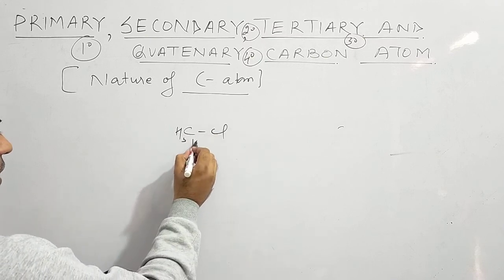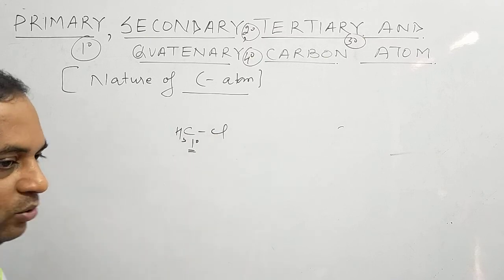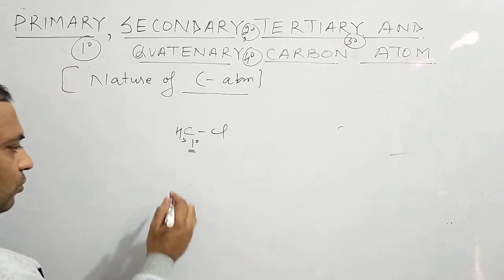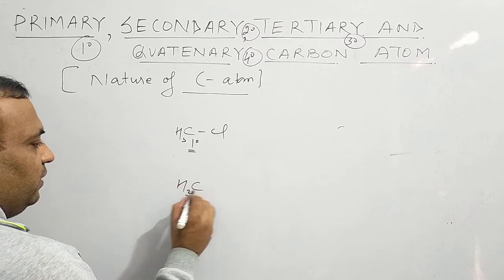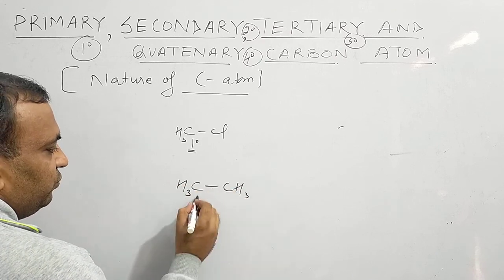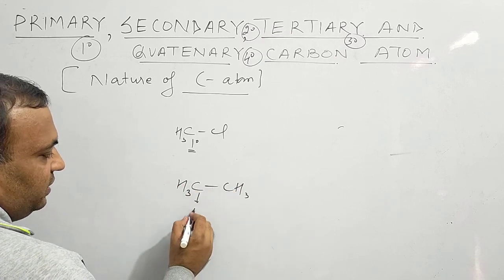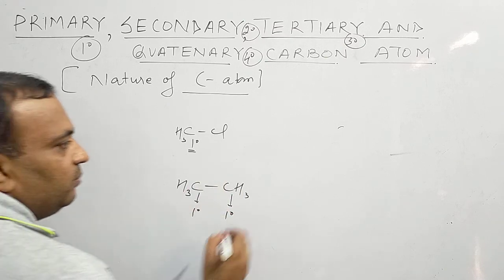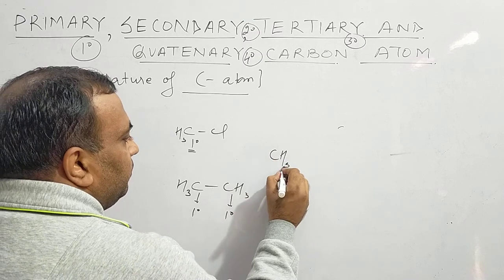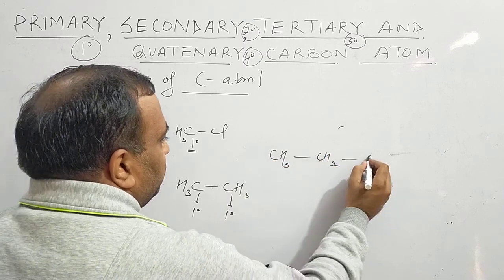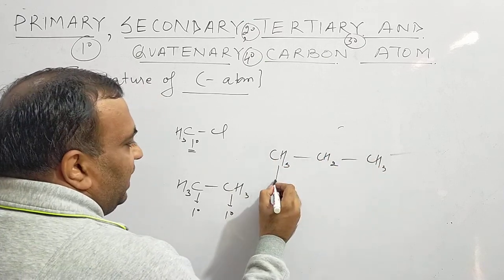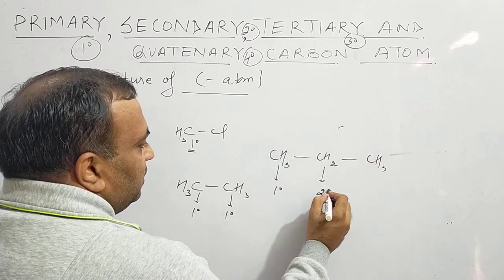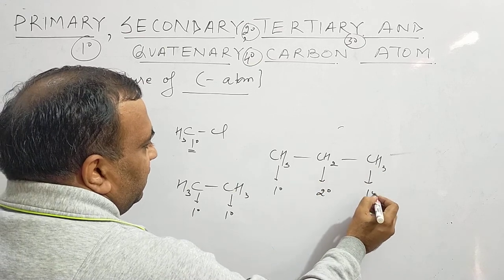Let us see another example. In CH3Cl, this carbon atom is primary — attached to one carbon atom, which fits the primary definition. In CH3-CH3, both carbon atoms are primary. In CH3-CH2-CH3, the first carbon is primary, the middle carbon is attached to two carbon atoms so it is secondary, and the last carbon is primary.